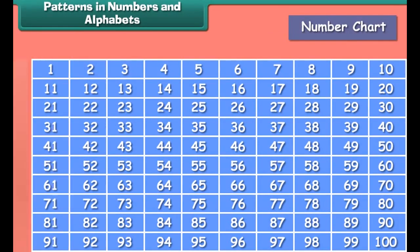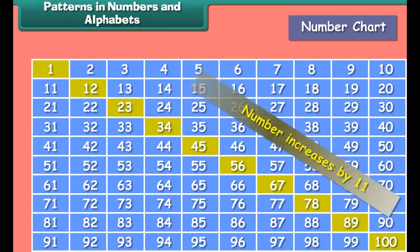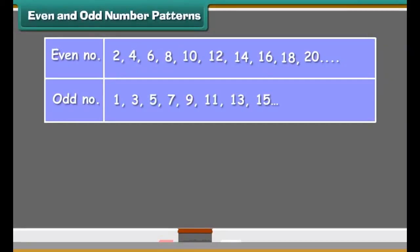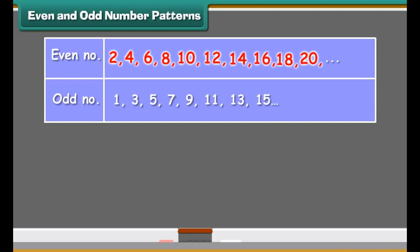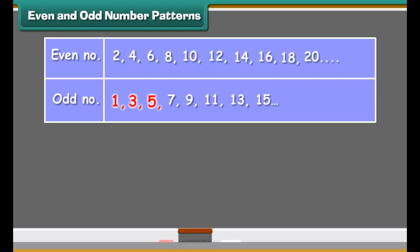This type of pattern is called a growing pattern. Look at the number chart given here. They follow some rule. In rows, the number increases by one. In each column, the number increases by ten, and diagonally the number increases by eleven. They are called growing patterns.